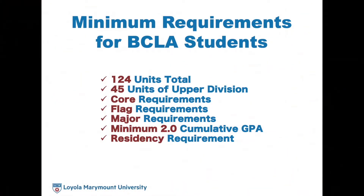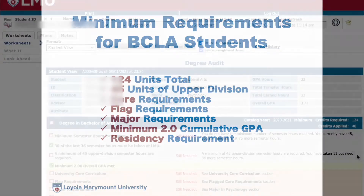As a student in BCLA, you must meet 124 units total, 45 units of upper division, all core requirements, flag requirements, all major requirements, a minimum 2.0 cumulative GPA, and the residency requirement.